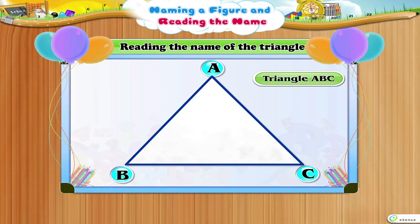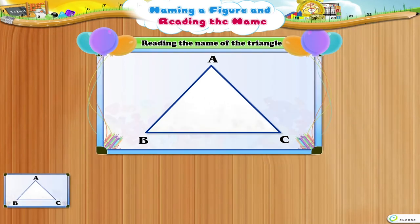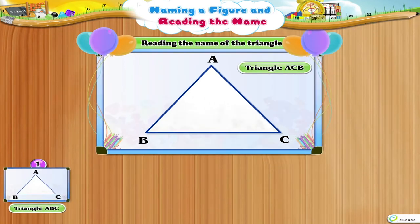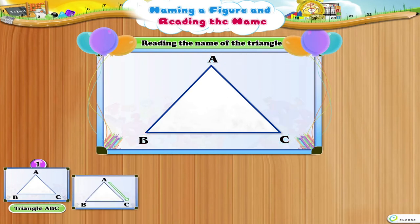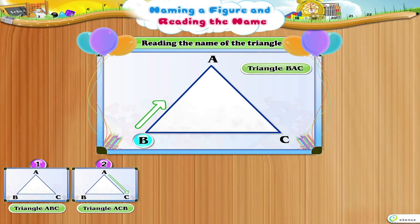There are five other ways to name the same triangle. They are: Triangle A, C, B. Triangle B, A, C.